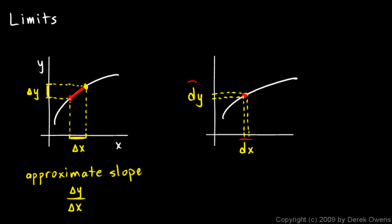It has a change in y this much and a change in x this much. It's just an infinitely short segment. It still has a slope, and we can say the exact slope is going to be dy over dx.